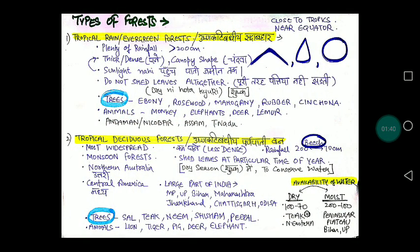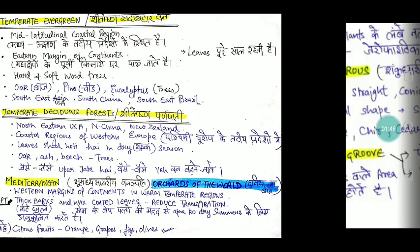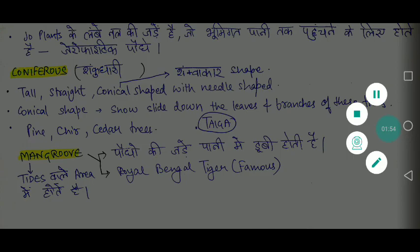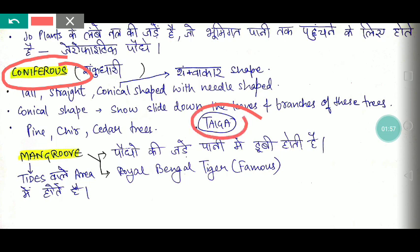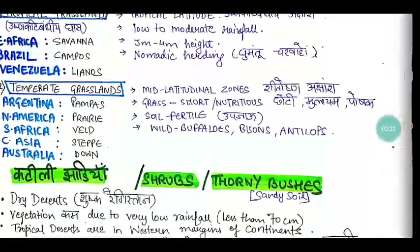In previous lectures, we have already covered evergreen forest, tropical deciduous forest, temperate evergreen, temperate deciduous, and Mediterranean vegetation types. Now we move on to grasslands.